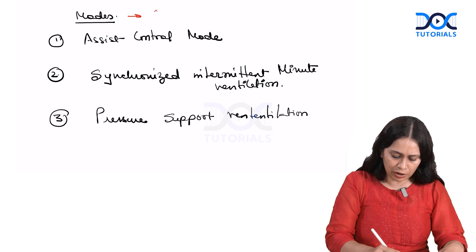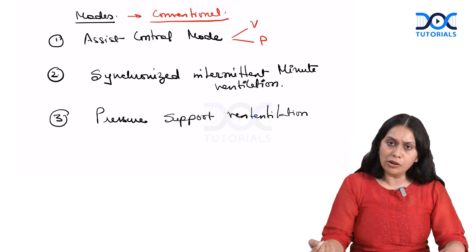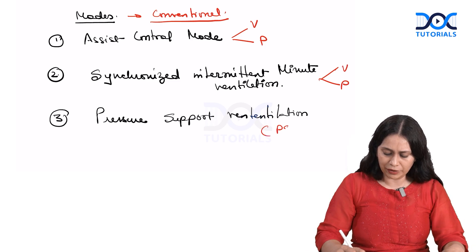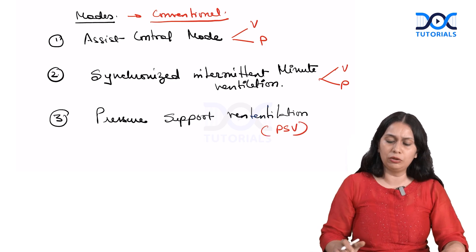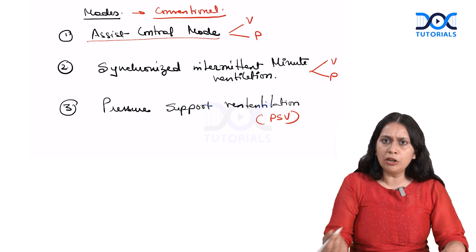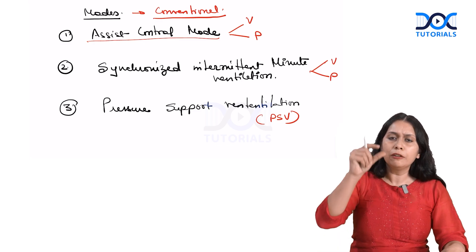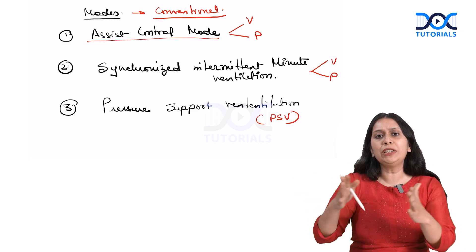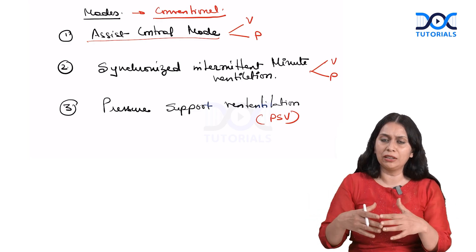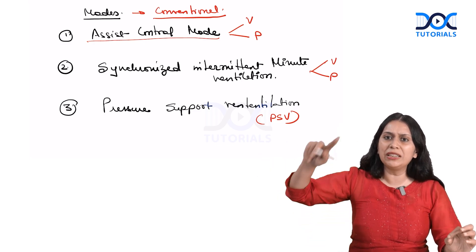The conventional modes include assist control mode — which has both volume and pressure control options — synchronized intermittent mandatory ventilation (SIMV), also with volume and pressure control options, and pressure support ventilation (PSV), which is a spontaneous mode. In assist control mode, each and every breath is either controlled or assisted by the ventilator with a fixed tidal volume delivered. In SIMV, there are fixed breaths controlled or supported by the ventilator, and between two supported breaths the patient can breathe spontaneously — that breath is not fully controlled by the ventilator.